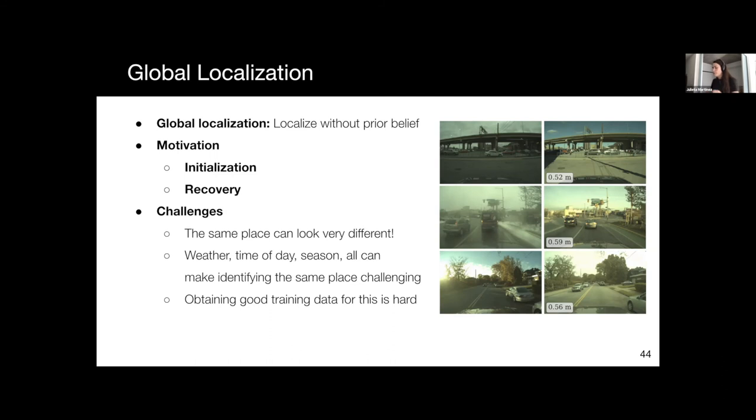The other challenge is that obtaining good training data for this is hard. The training data that you want captures the same place under many different circumstances. You want to see the same place when it's sunny, when it's raining, when it's cloudy, when it's snowing, during the day, maybe at night. So you have to make a lot of trips over the same area. But you also want to capture different places. So you probably want to make a lot of trips over a year. And you also want to do this over many parts of a city, for example. So it can be operationally challenging to collect data to train these methods.